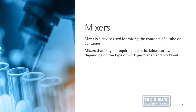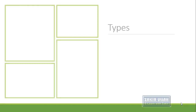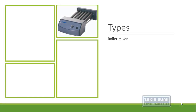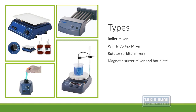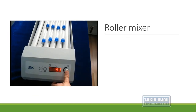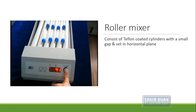Mixers are required in different district and central laboratories depending on the type of work performed and the amount of workload. Laboratories with a small amount of tests require different types of mixers, and those with heavy workload require different types as well. The types of mixers include: the roller mixer, the vortex mixer, the rotator or orbital mixer, the magnetic stirrer mixer and hot plate, and the shaking mixer or shaker.